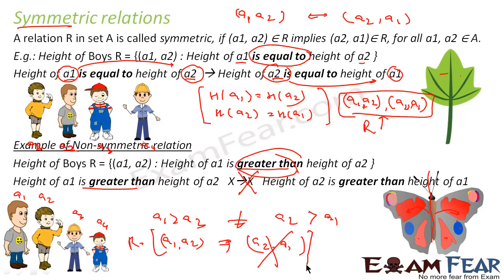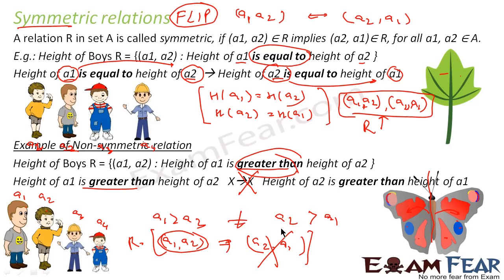If you have (a1, a2) in the relation, then (a2, a1) is not there — or vice versa. Either of these will happen, and such a relation is called non-symmetric. The key word for symmetric is 'flip': if (a1, a2) is there and you flip it to get (a2, a1), and both are present, that is a symmetric relation. Even if one single (a2, a1) is missing for some (a1, a2), the relation is non-symmetric. You must have all flipped pairs present for the relation to be symmetric.